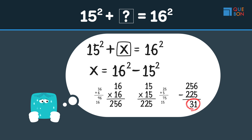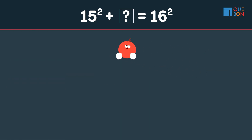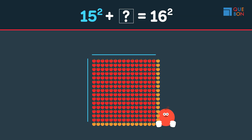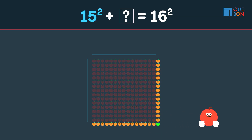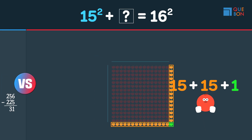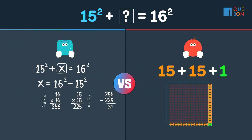Sweaty calculated this by multiplying, adding, subtracting, and so on. Wow, Sweaty is sweating! Now let's look at Quera's method. Quera uses a square to represent 15 squared and makes 16 squared by adding a column to the right, a row onto the bottom, and one on the corner — which is 15 plus 15 plus 1. Simple, right?